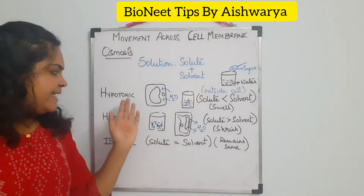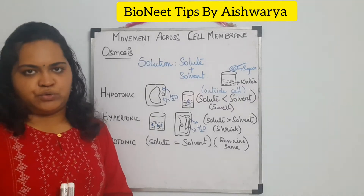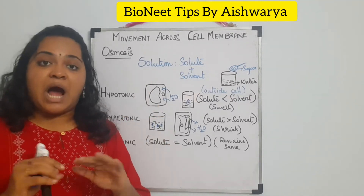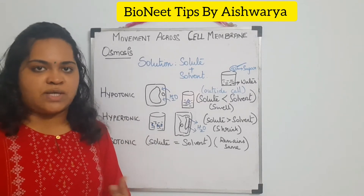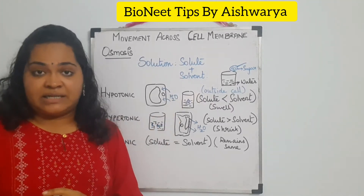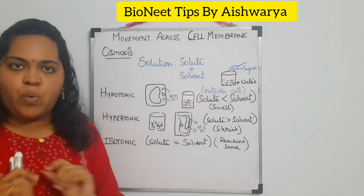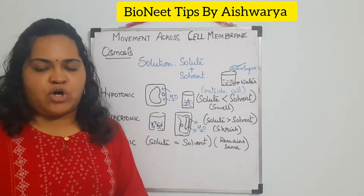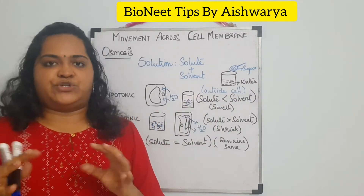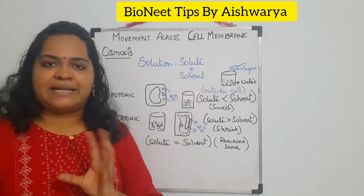We will study three types of solutions that are very important: hypotonic, hypertonic, and isotonic. In a hypotonic solution, the solvent concentration outside the cell is more compared to inside the cell. For example, if you take dry grapes or raisins and place them in a beaker of water, water enters the cell and the dry raisins swell up, because the water concentration outside was higher.